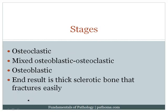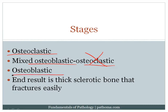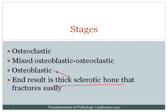The stages of Paget's disease are: first, the osteoclast goes crazy (osteoclastic phase); then a mixed osteoblastic-osteoclastic phase; finally, the osteoclast burns out and the osteoblast tries to lay down as much bone as possible. The end result is thick sclerotic bone that is not laid down with proper balance, and therefore fractures easily.